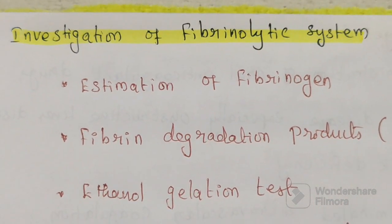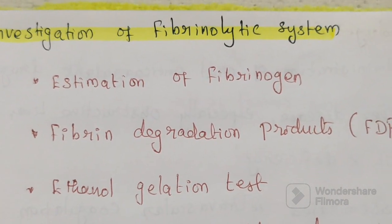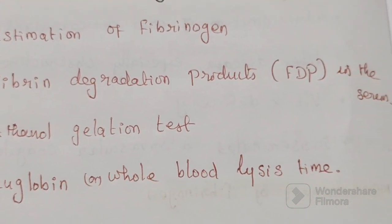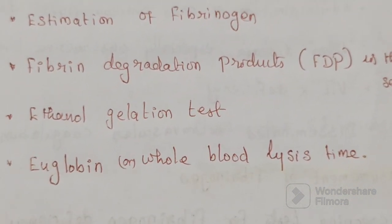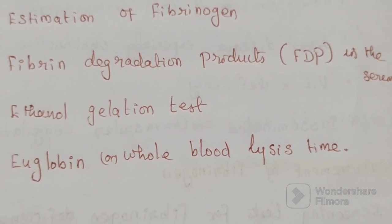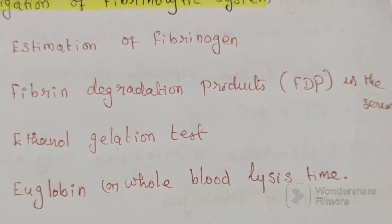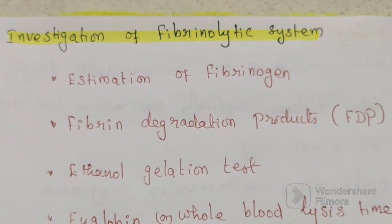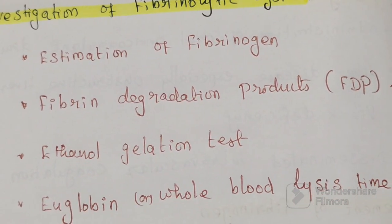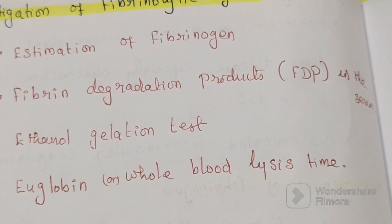Investigation of the fibrinolytic system includes: estimation of fibrinogen, fibrin degradation products (FDP) in serum, ethanol gelatin test, and euglobulin clot lysis time (whole blood lysis time).